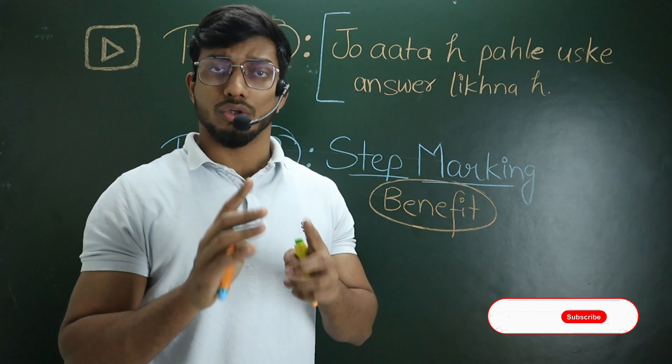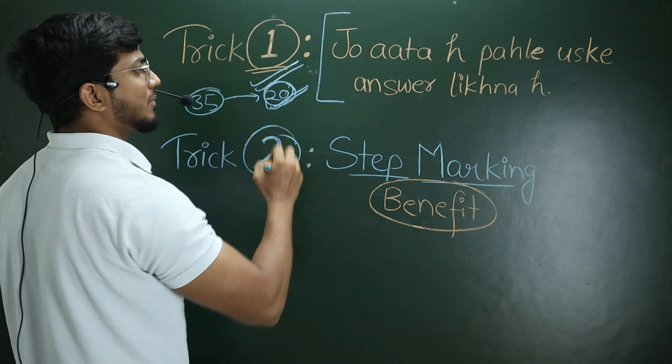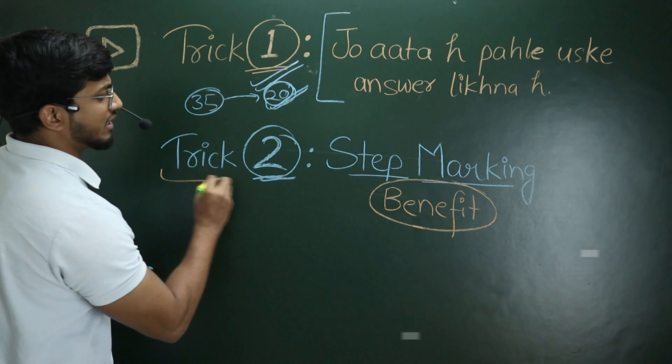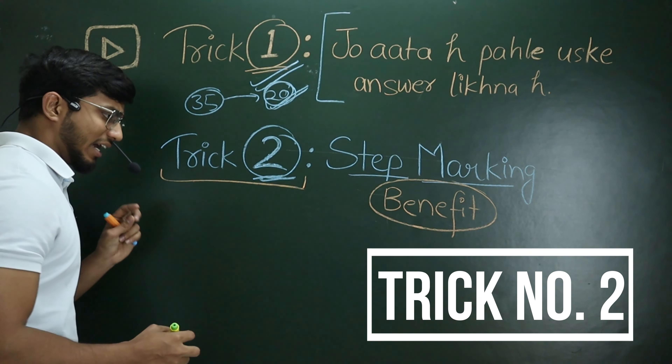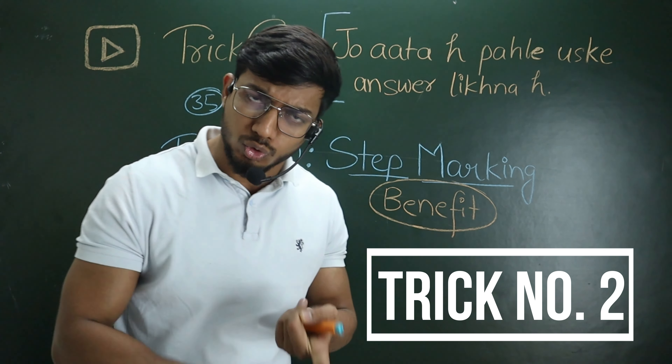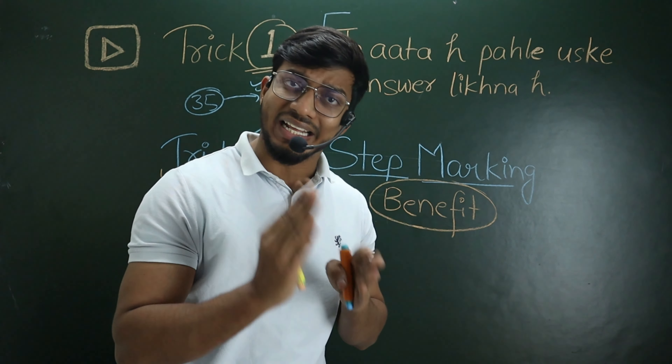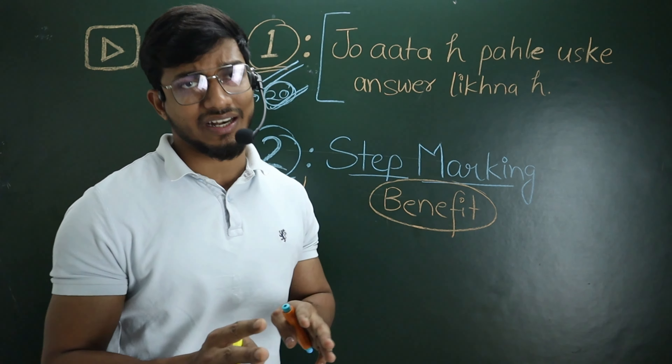The first trick is about which questions you have to answer first. You have to write the questions you know first, so that your confidence will build and you will attend the majority part. For example, if you have 20 questions and you know 15 of them, attend those 20 first to build confidence, and then use the next trick for the remaining 15.